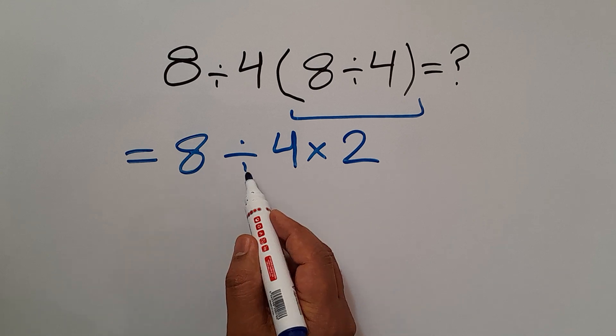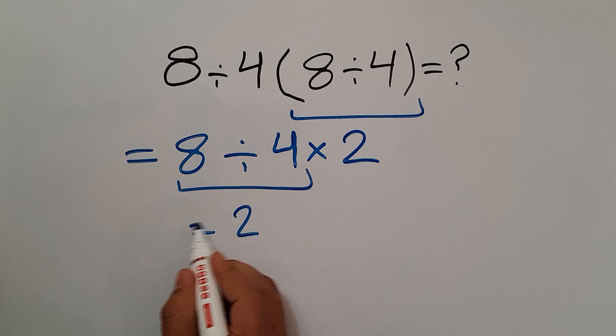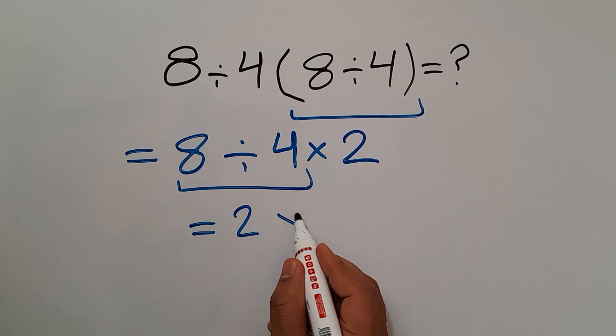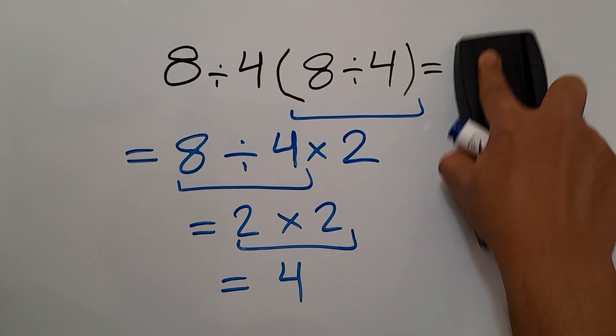So first, 8 divided by 4, which equals 2. So 2 times 2, and 2 times 2 equals 4. Our final answer to this problem is 4.